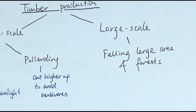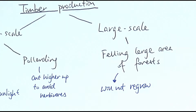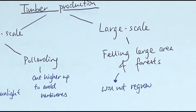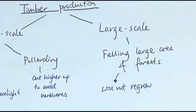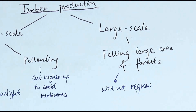On the other hand, large scale timber production refers to the felling of large areas of forest — almost like deforestation. You cut down entire trees, or use controlled burning. The problem is that the trees will not regrow because you're destroying large areas of forest. In some sense, large scale timber production is not sustainable and can potentially cause problems such as soil erosion, due to the lack of tree roots to protect the soil and its nutrients.